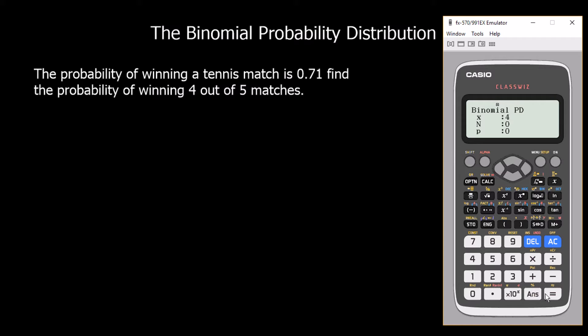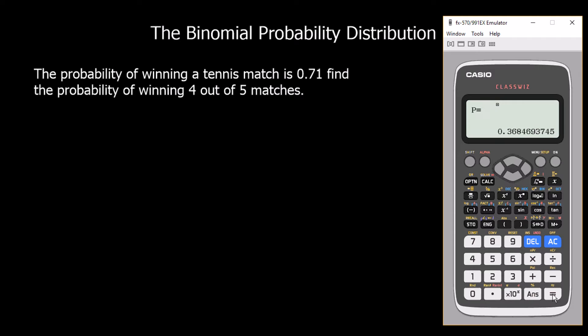We put four and press equals. N is how many events there are in total — it's out of five matches — so we press five. P is the probability of winning each time, which is 0.71. Press equals and equals again and that gives us the answer: the probability of winning four out of five matches is 0.368 to three significant figures.